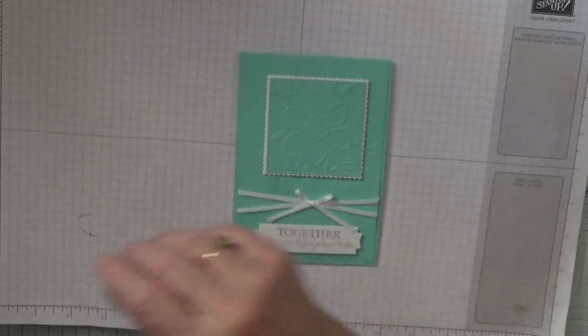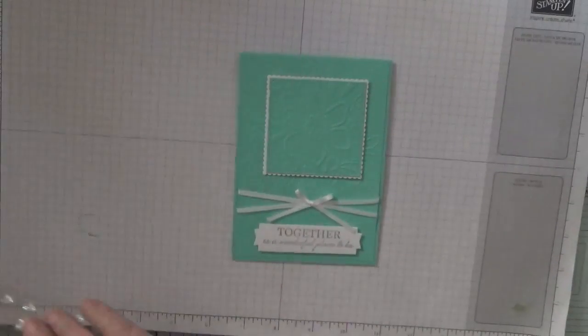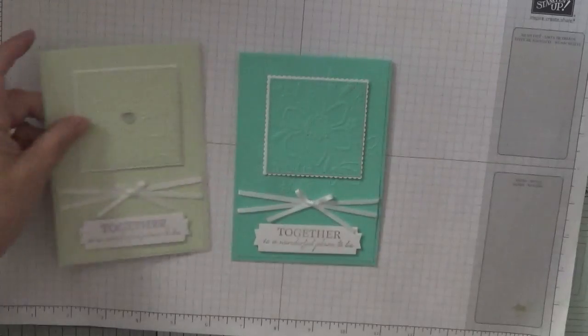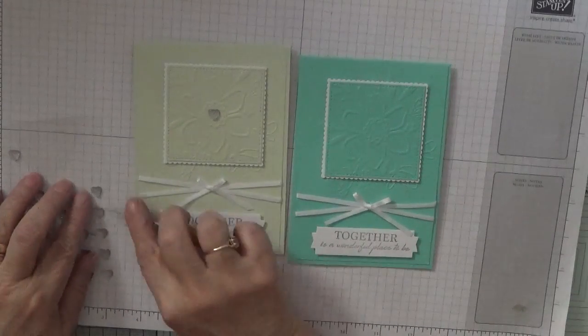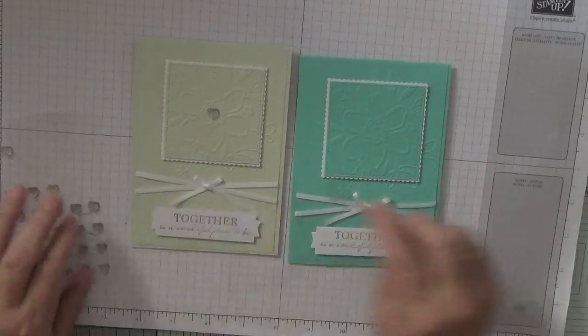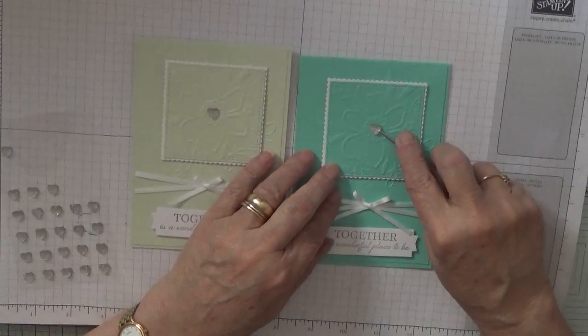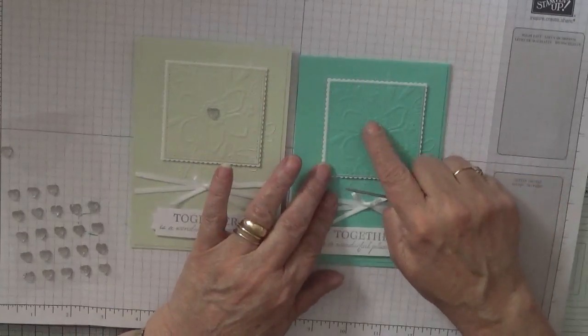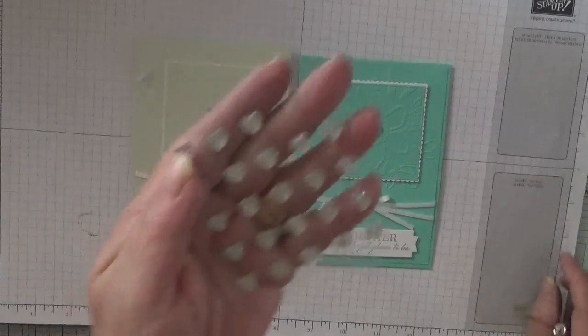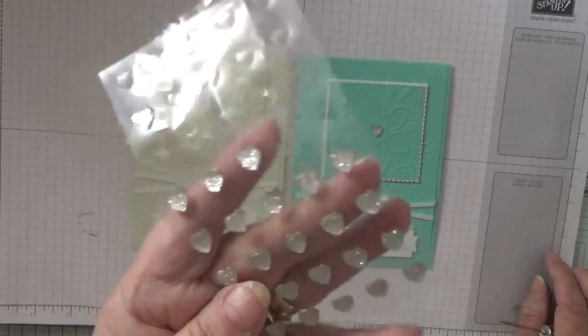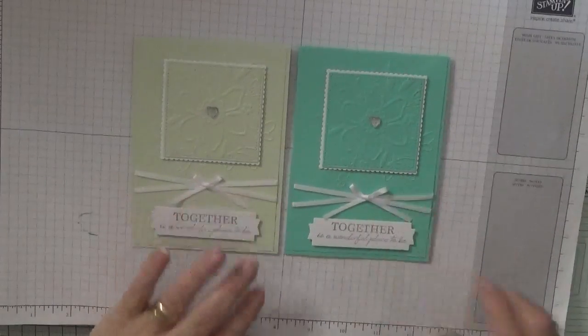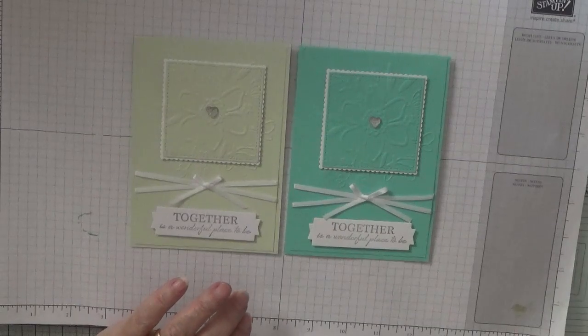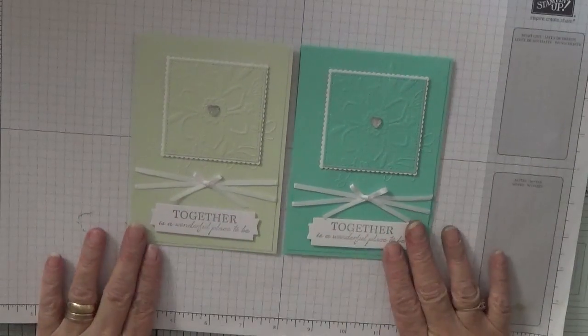Right, what I'm going to do is put one faceted heart gem which I've got in the middle of the flower. These are just little hearts that I've had for a while. And there you have it.